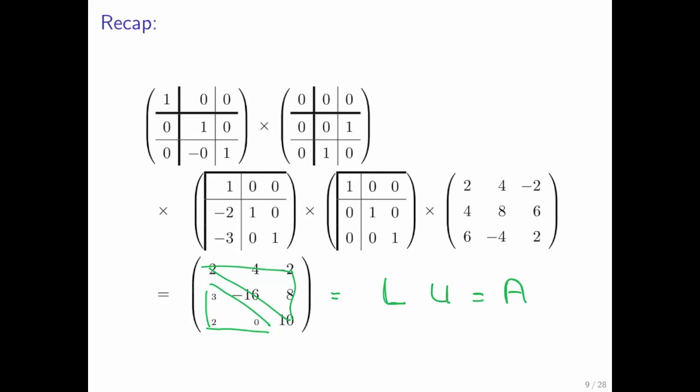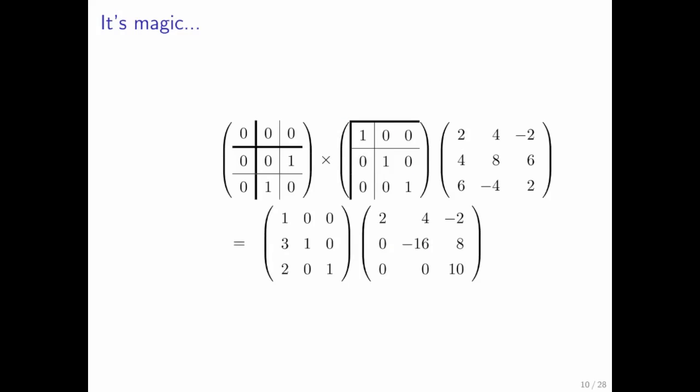But now, actually, it is not equal to the original matrix A. Why? Because in the process of doing our computation, we did these permutations. So what really happened is that you've computed the LU factorization of a permuted matrix A, where P here represents a permutation matrix.